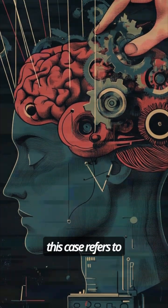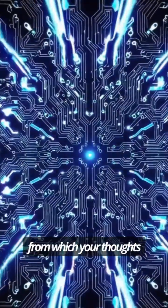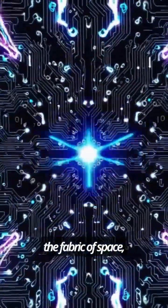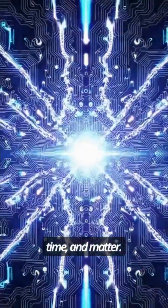The implicate order in this case refers to the information matrix from which your thoughts emerge from beneath the fabric of space, time, and matter.